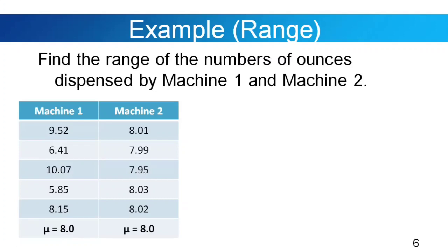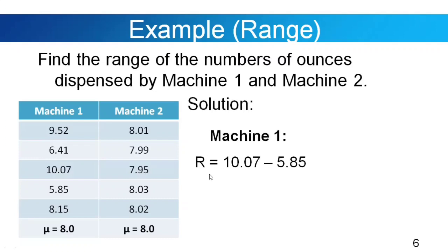That is the average amount in ounces dispensed by machine one. For machine two, we have: 8.01, 7.99, 7.95, 8.03, and 8.02 ounces — the same average as machine one. To solve for the range of machine one: the highest value is 10.07 minus the lowest value 5.85, so the range for machine one is 4.22 ounces.